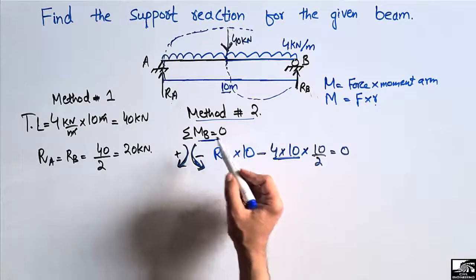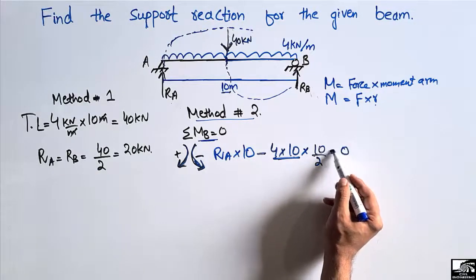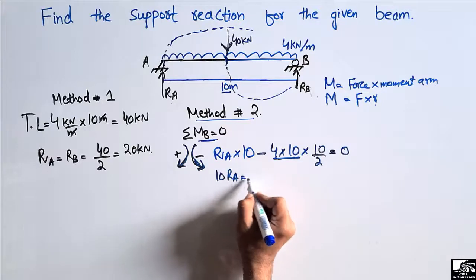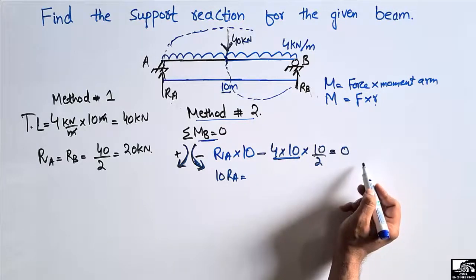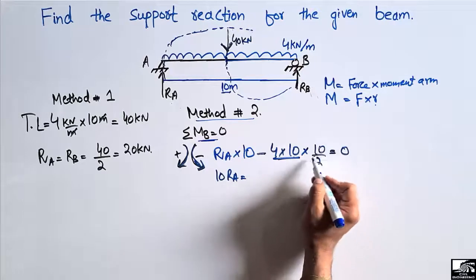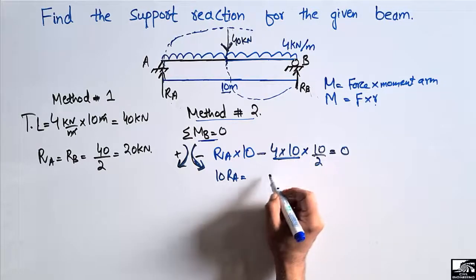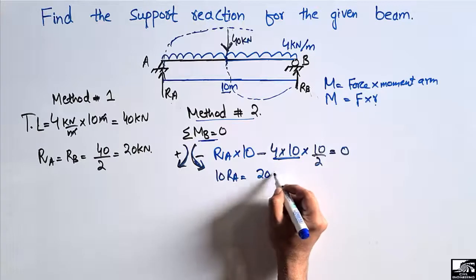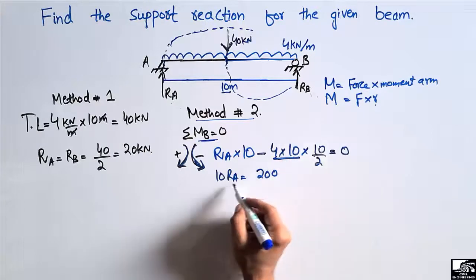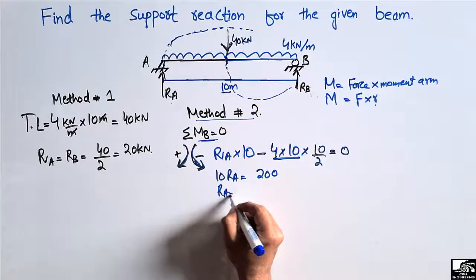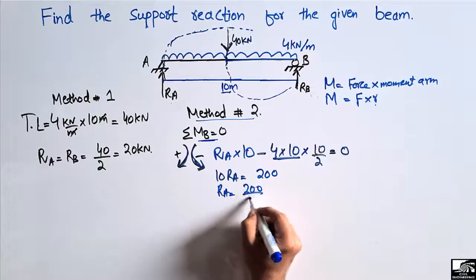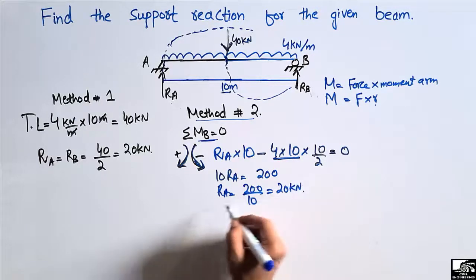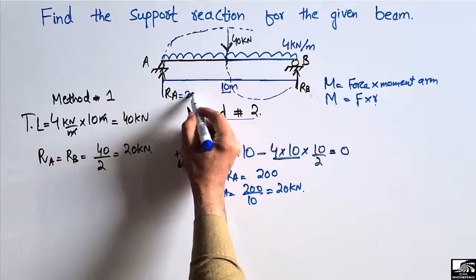Shifting the 10·RA term, we get 10·RA = 4 × 10 × 5 = 200. Therefore RA = 200 ÷ 10 = 20 kilonewton. So RA is found to be 20 kilonewton using the second method as well.